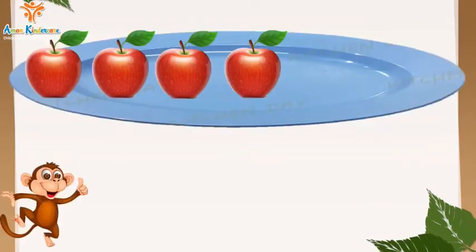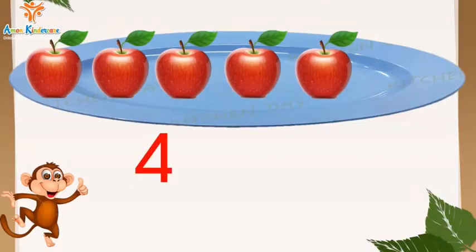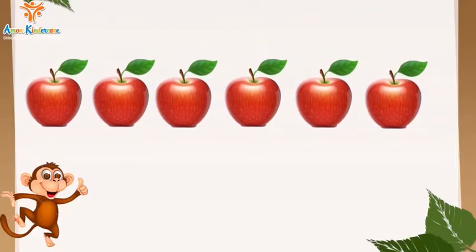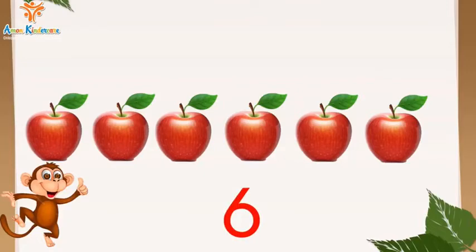Tiếp theo, ở đĩa này cô có 4 quả táo. Sau đó, cô thêm vào 2 quả táo nữa. Hỏi rằng cô có tất cả bao nhiêu quả táo? Vậy là 4 quả táo thêm 2 quả táo bằng 6 quả táo. 4 thêm 2 bằng 6.